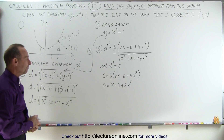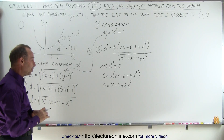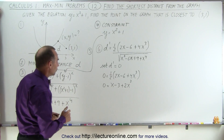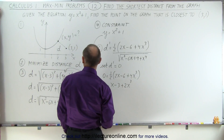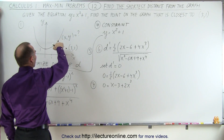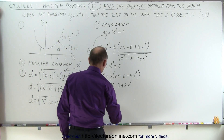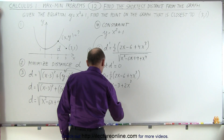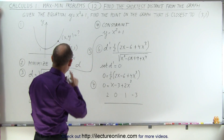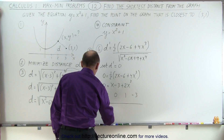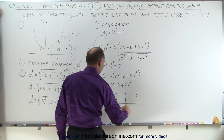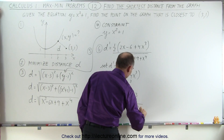Now we have to find the root of that, which is a bit more difficult because it's a cubic function. We'll solve this using synthetic division and guess for some roots. The coefficients are 2 for x cubed, 0 for x squared, 1 for x, and negative 3 for the constant. Let's try x equals 2: drop down the 2, 2 times 2 is 4, add to get 4, 2 times 4 is 8, add to get 9, 2 times 9 is 18, add to get positive 15 — which is not 0, so x equals 2 didn't work.